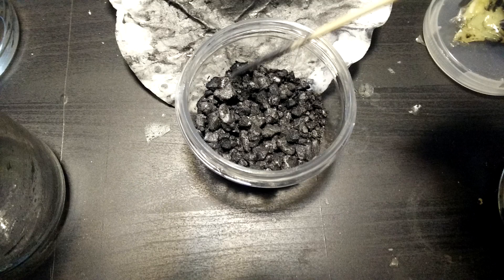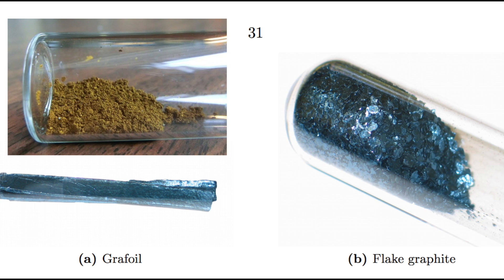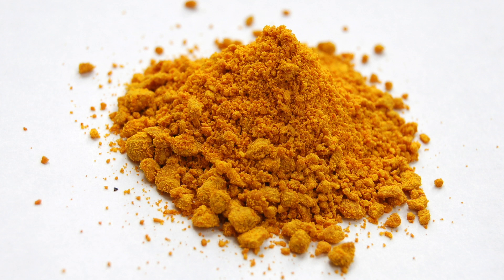Unfortunately, while this particular intercalated compound is easy to produce, its uses are kind of limited. But it serves as a really good introduction to the concept. So in future videos, we'll be revisiting this to see how we can make some of the more interesting compounds, starting with iron chloride intercalated graphite, which is both a spin glass and is more conductive than regular graphite. Be sure to check back every other Monday for all of that.